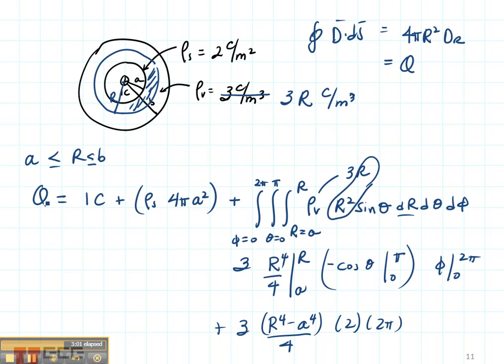So I will set this right-hand side equal to this left-hand side and solve for D_R. So there's the case when I'm between A and B.